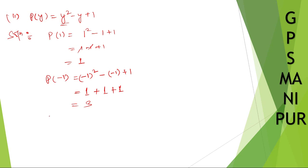p of 2: instead of y put 2, so 2 squared minus 2 plus 1. That's 4 minus 2 plus 1, which is 2 plus 1 equals 3.